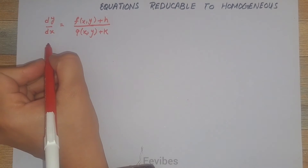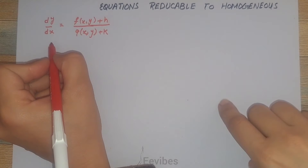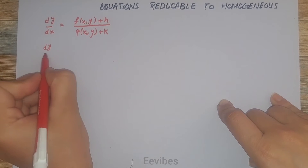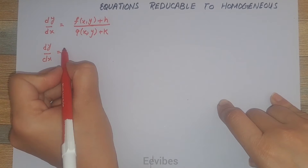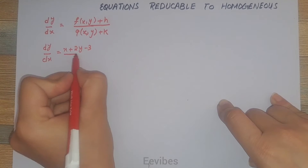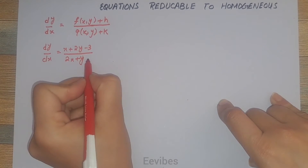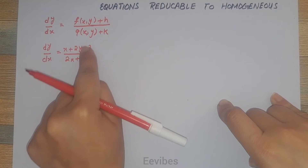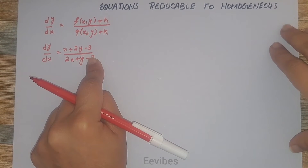Let's consider an example and see how we can solve such equations. Given the differential equation dy/dx = (x + 2y − 3) / (2x + y − 3), my goal is to remove these constants from the numerator and denominator.